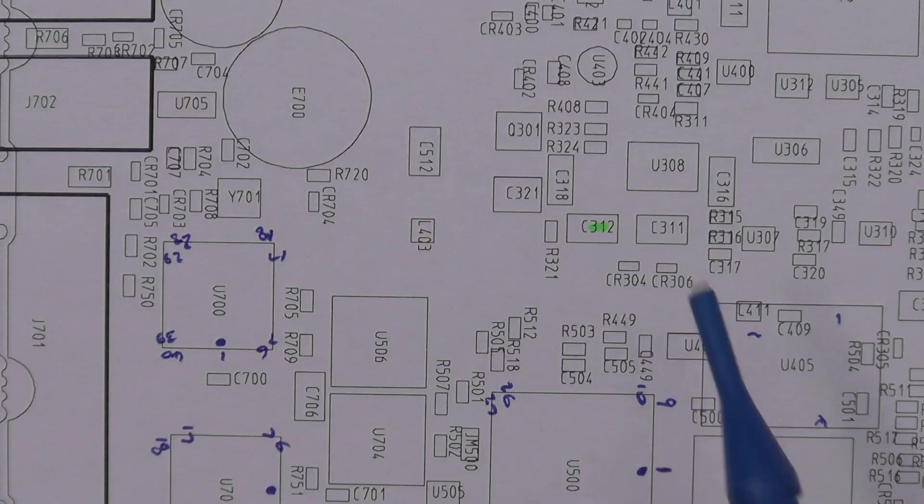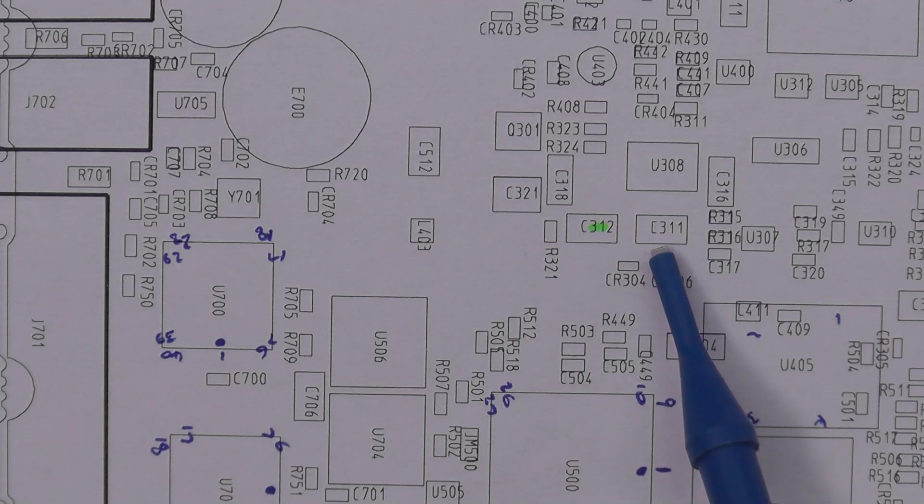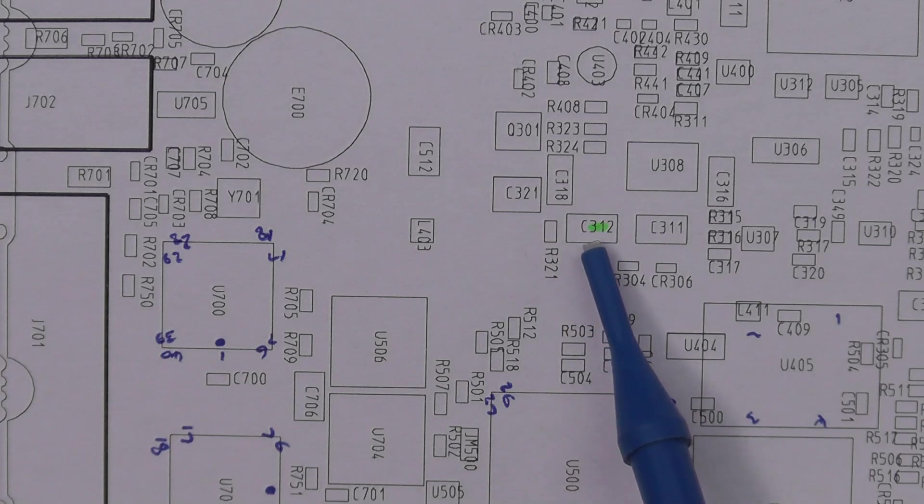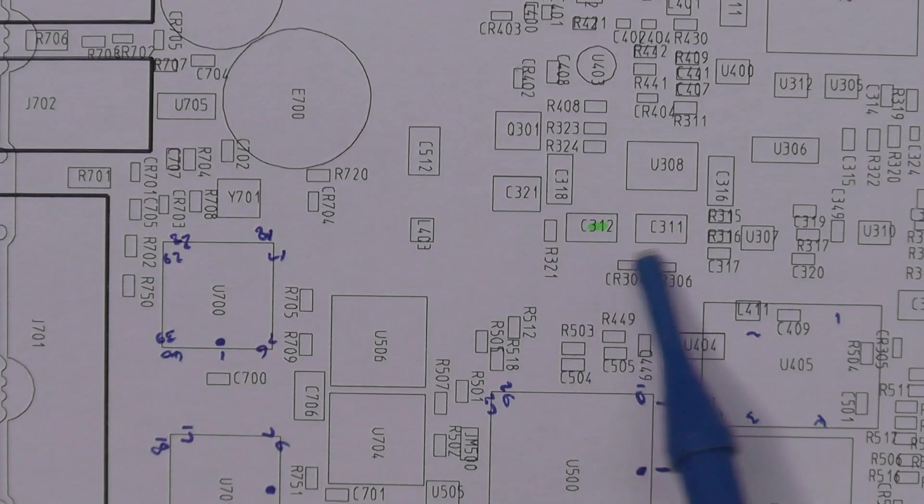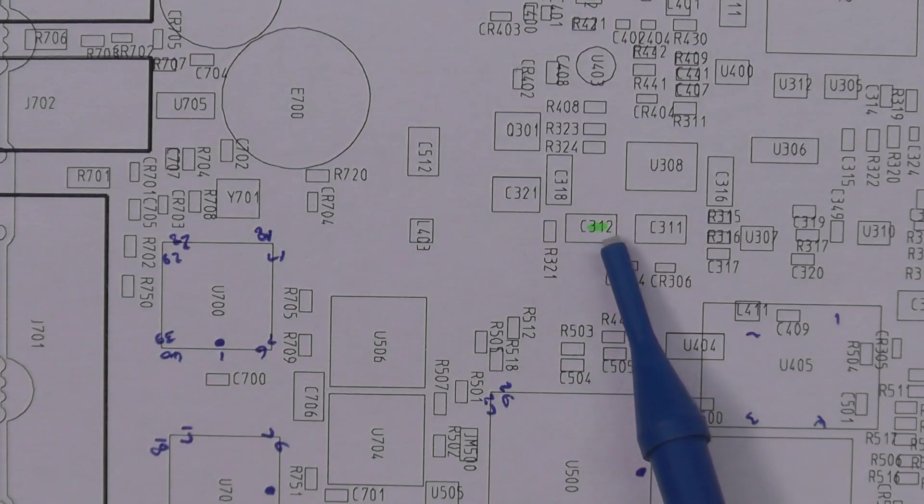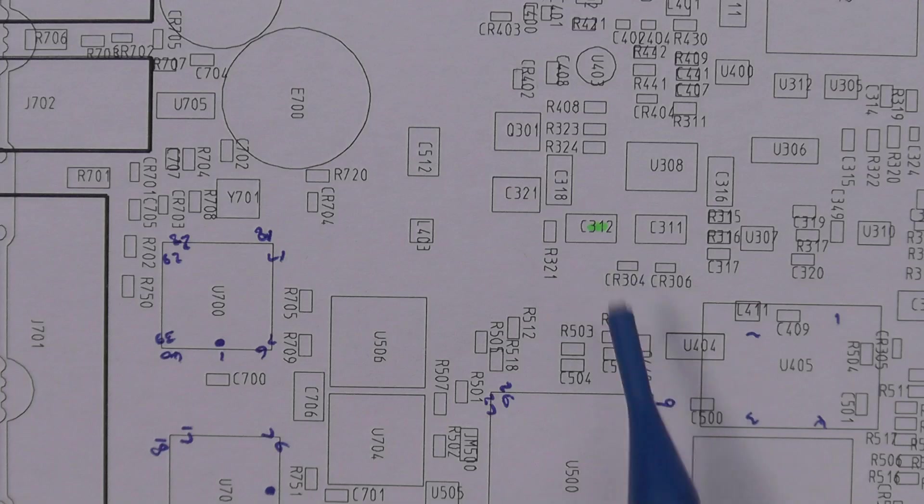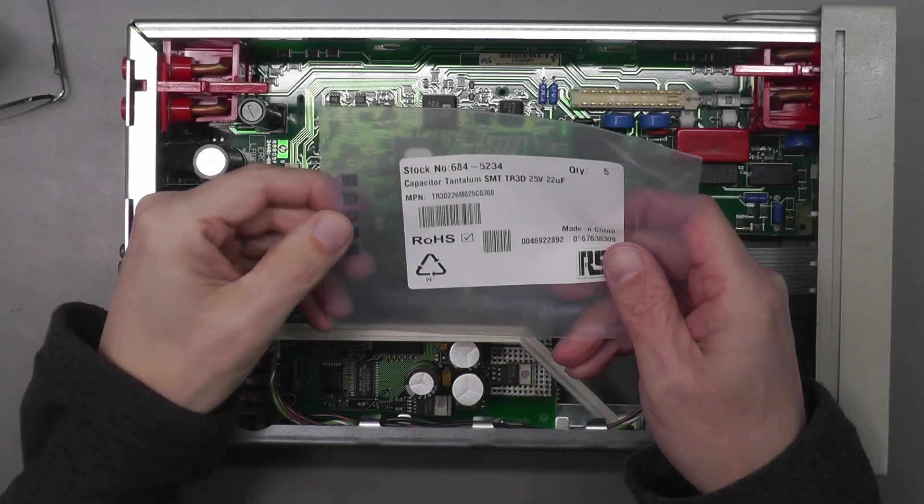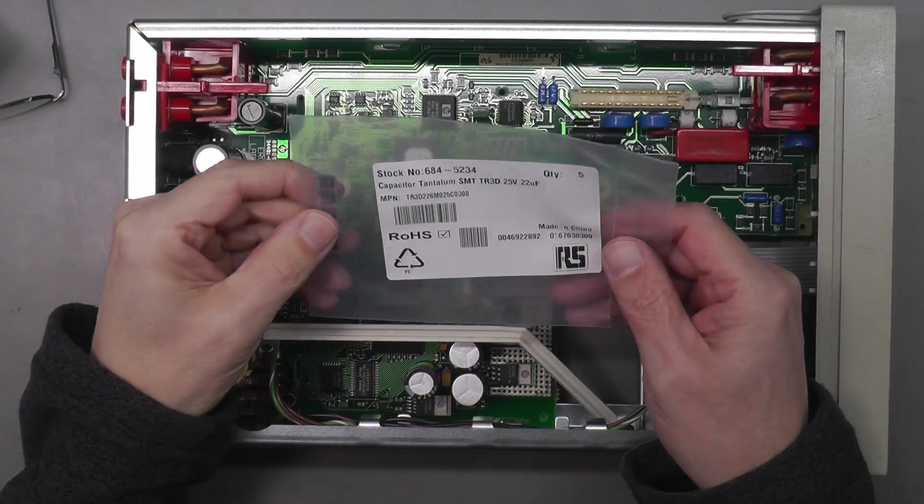There it is in the component layout: C311, and its sister part is C312. I'll probably just replace them both. They're both 22 microfarad 20 volt tantalum capacitors. Let's get them changed out.